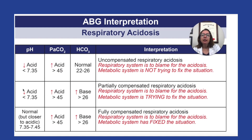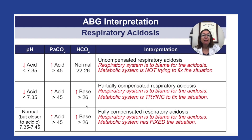Looking at the next row: again, pH is under 7.35, so we have acidosis. Our PaCO2 is over 45, so we have respiratory acidosis. Now let's look at bicarb. If the HCO3 is over 26, that is basic, which means that the metabolic system is trying to compensate for this respiratory acidosis. But because the pH is still under 7.35, it hasn't done the job completely. So in this case, we have partially compensated respiratory acidosis — the respiratory system is to blame, the metabolic system is trying to fix the situation by becoming more basic, but it hasn't completely fixed it because our pH is still out of range.